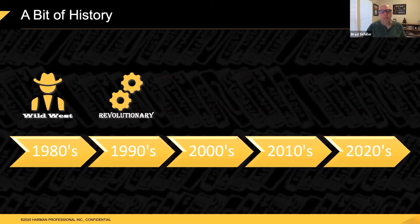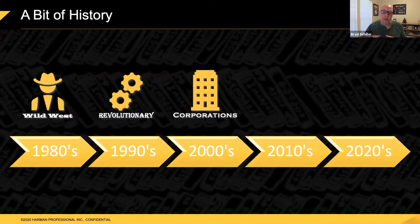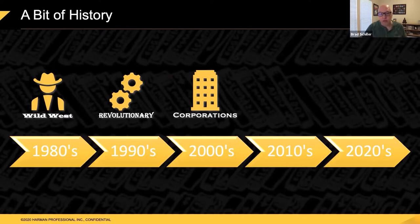As we moved into the 2000s, we started to see a lot of venture capitalists and corporations. People looked at our industry and said there's money to be made here. We really started to see this investment into the industry — the companies that were producing lights became more professional on their assembly lines and in their development processes. Competition got really strong between the major players, which drove a lot of innovation. People took risks, tried new products — we saw digital lights emerge, media servers come out, and consoles change. It was a really exciting time.